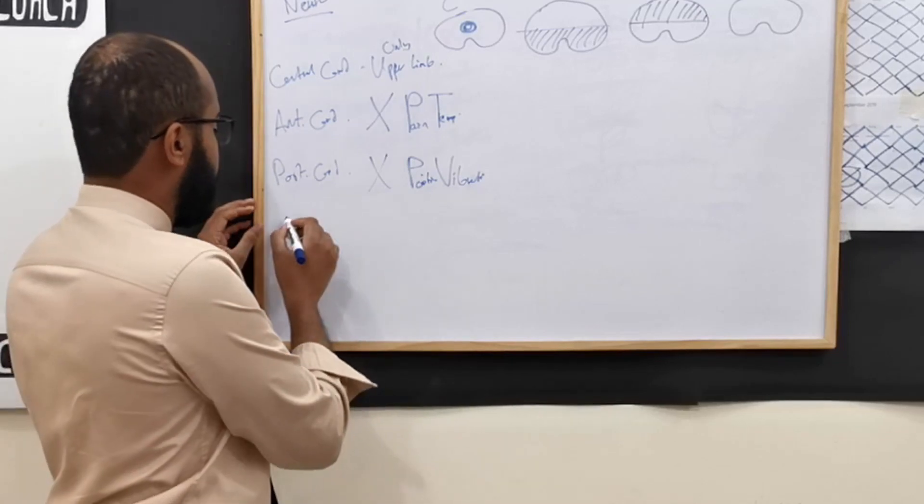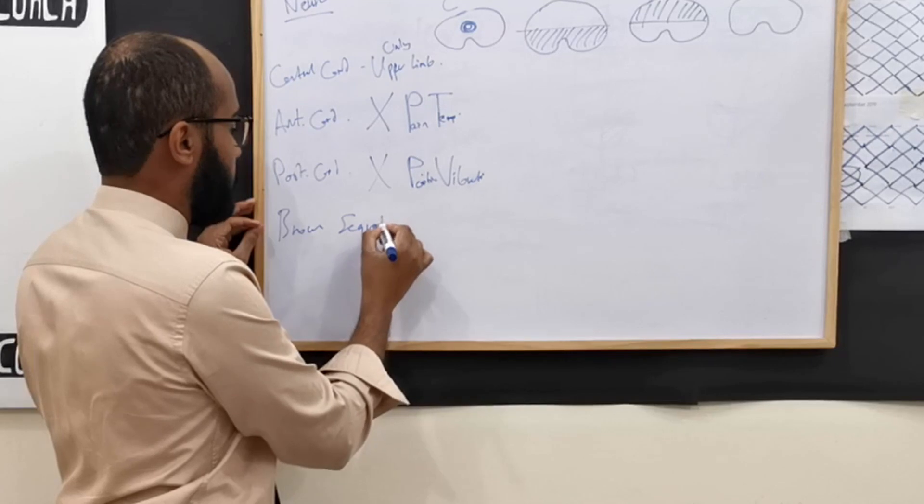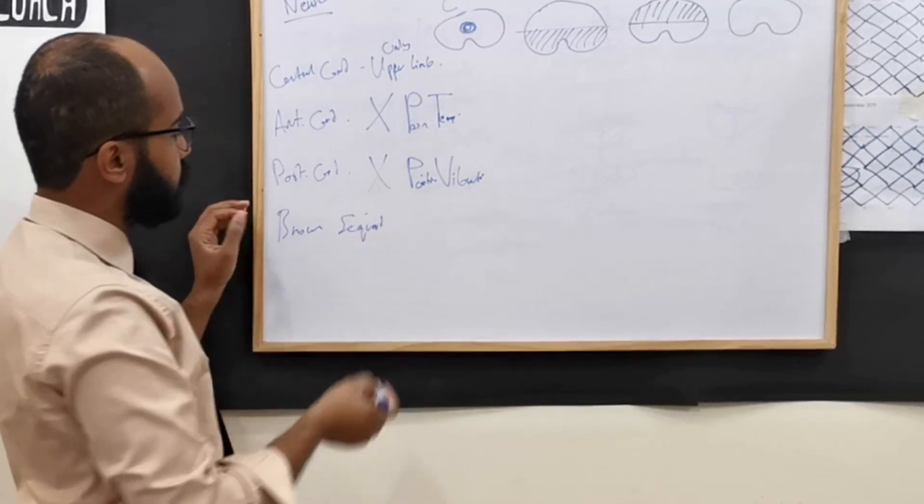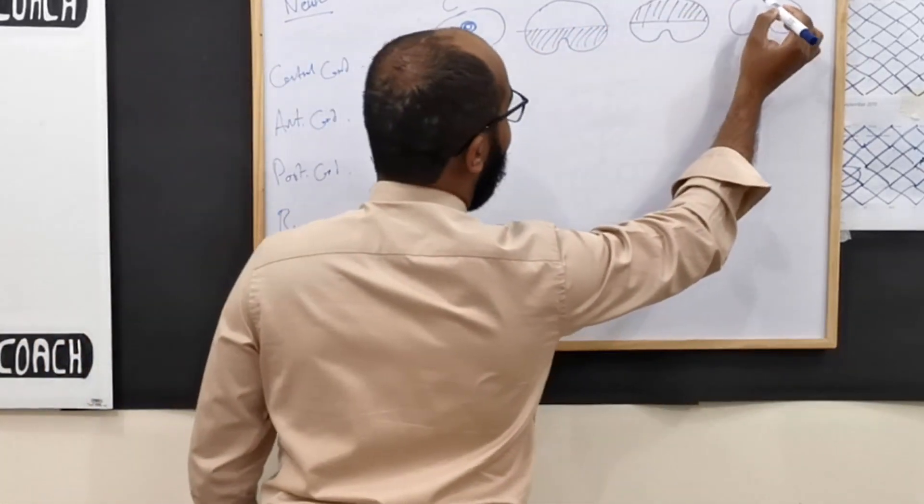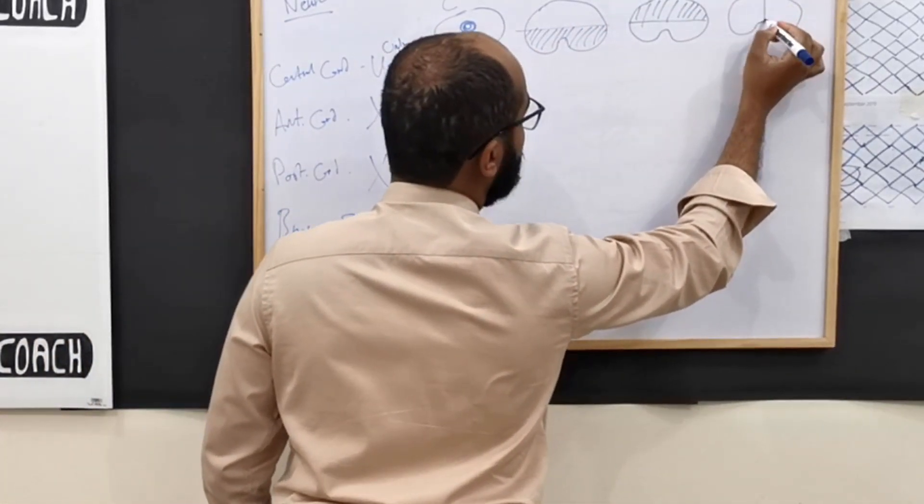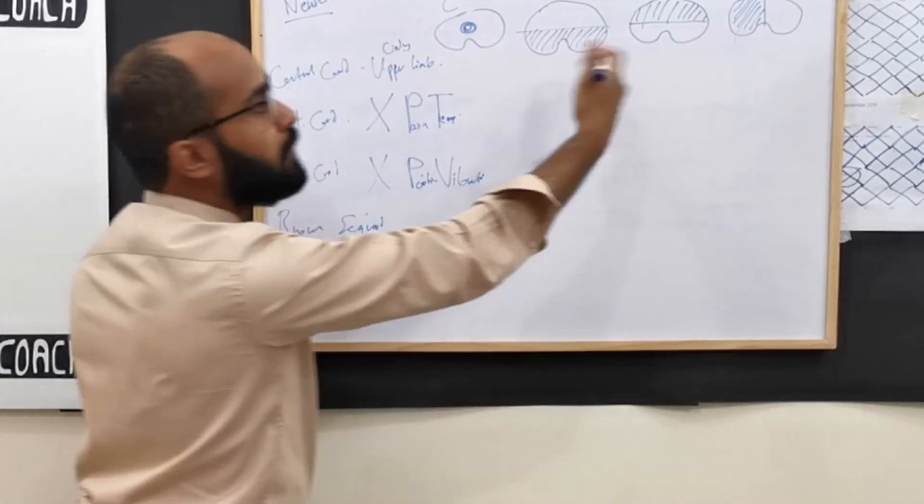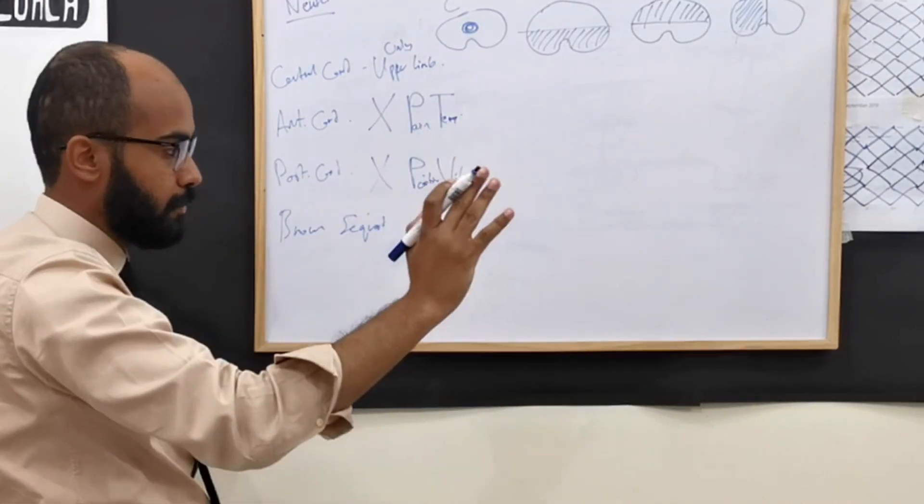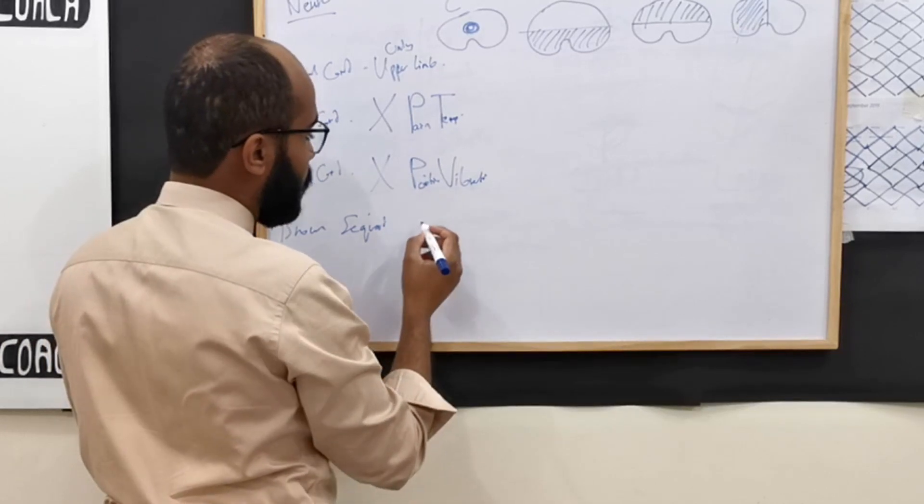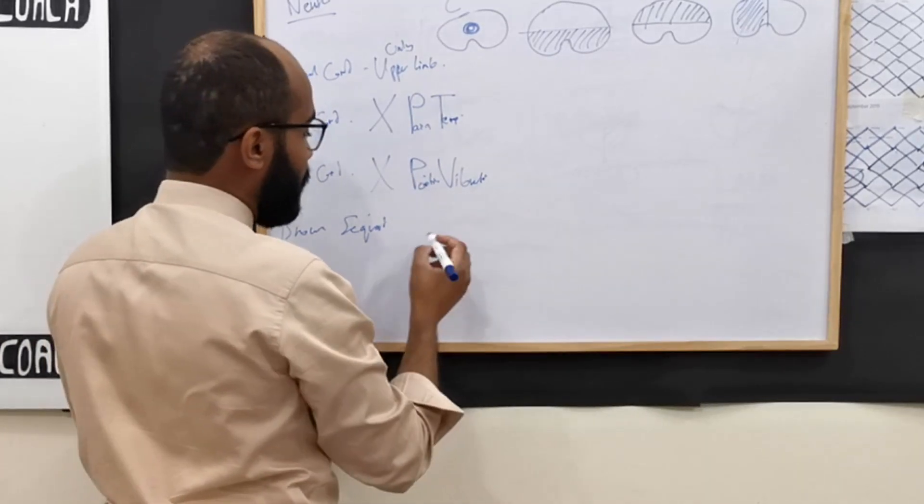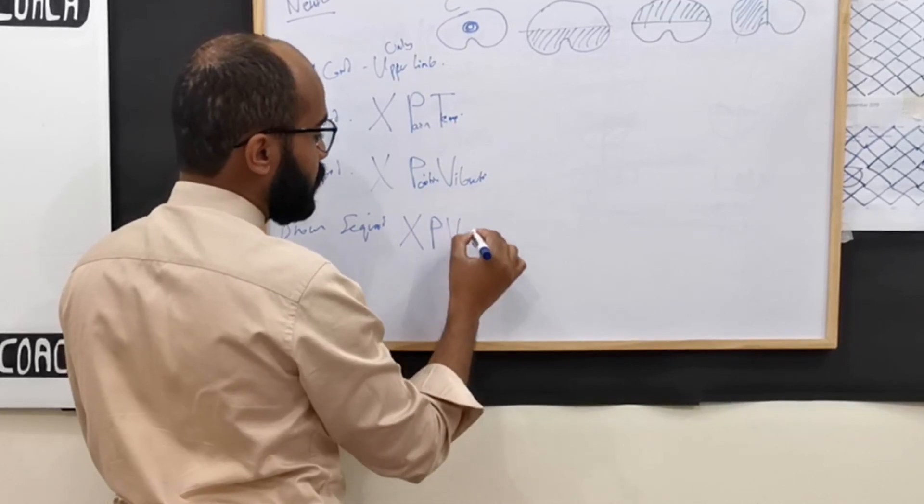Finally is BS, Brown-Séquard. What happens with Brown-Séquard is half of the cord is affected. It could be any half, the right half or the left half. But what's more important to know at this point is the affected half is going to have loss of P, V, and motor.